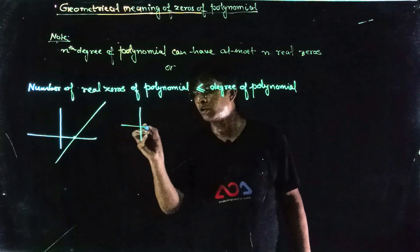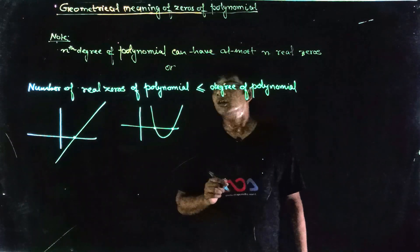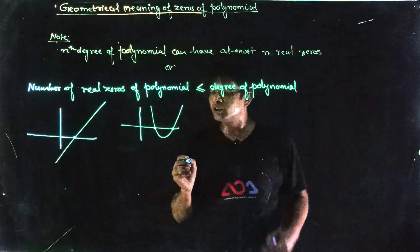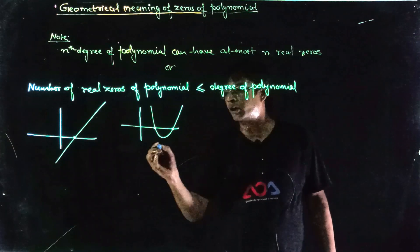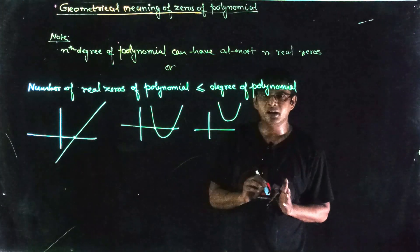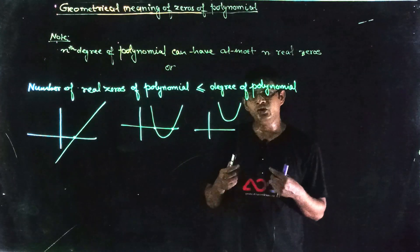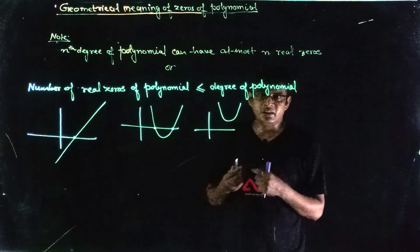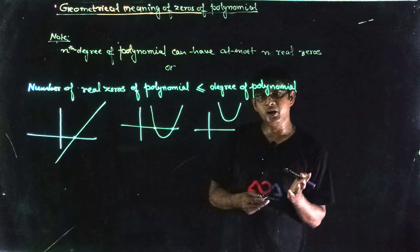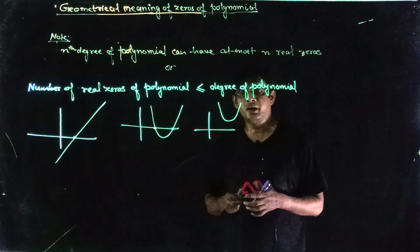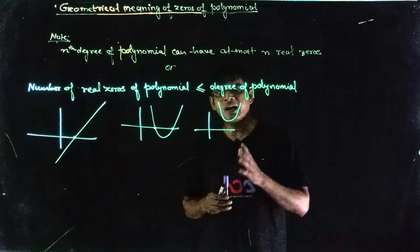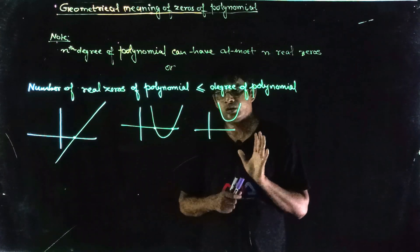Suppose this is the graph of a quadratic polynomial; it is cutting the x-axis at two points, so it has 2 real zeros. Now suppose if this curve does not cut the x-axis at all — it is not cutting the x-axis — then its real zeros will not exist. Zeros do exist, as we discussed last time that zeros are of two types: real and imaginary. Imaginary zeros are discussed in higher classes; in our standard, we discuss real numbers. So since the curve is not cutting the x-axis, it has no real zeros.